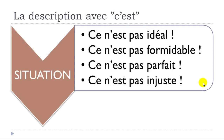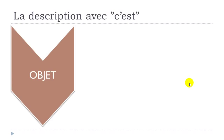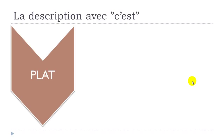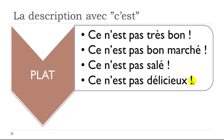For a situation: 'Ce n'est pas idéal,' 'Ce n'est pas formidable,' 'Ce n'est pas parfait,' 'Ce n'est pas injuste.' For an object: 'Ce n'est pas cher,' 'Ce n'est pas utile,' 'Ce n'est pas beau,' 'Ce n'est pas adapté.' For a dish: 'Ce n'est pas très bon,' 'Ce n'est pas bon marché,' 'Ce n'est pas salé,' 'Ce n'est pas délicieux.'